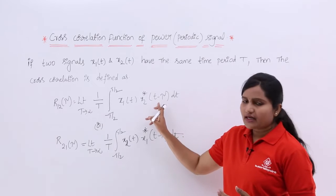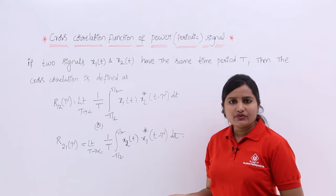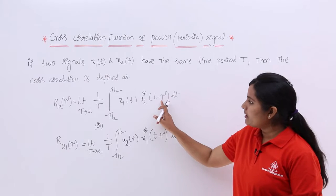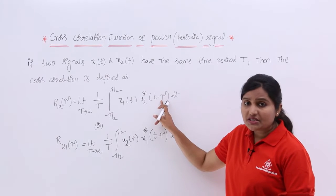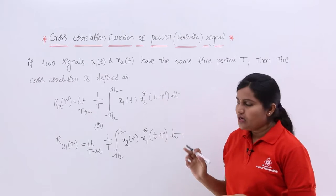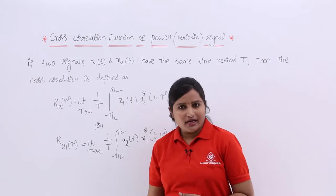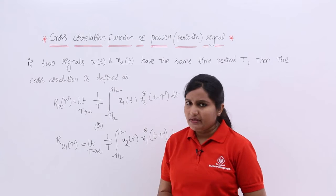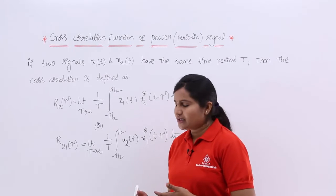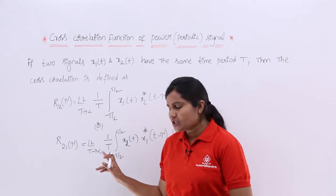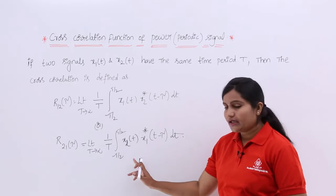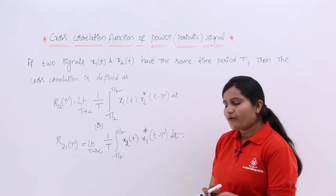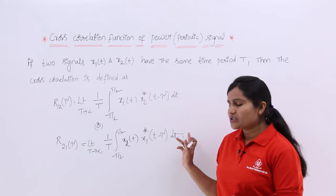You can consider a negative shift as well — that means t plus τ can also be used. You can change the shift in either position. Now coming to the cross correlation of power signals for r21 — the second signal correlated with the first — that is defined as: limit T tending to infinity, 1/T, integral from minus T/2 to T/2 of x2(t) · x1*(t − τ) dt.